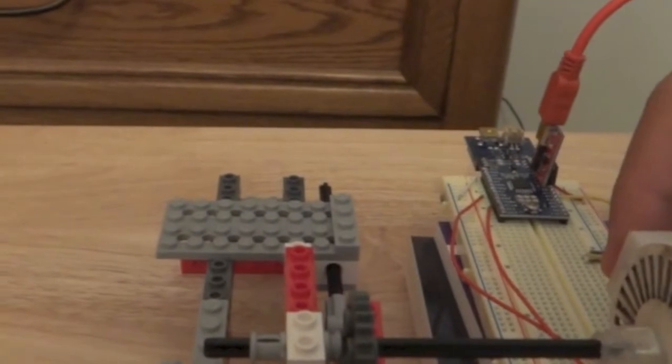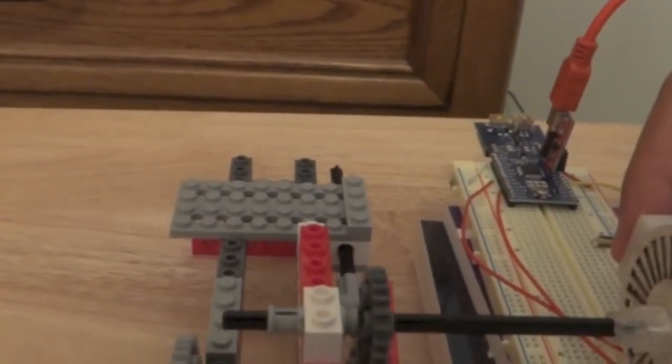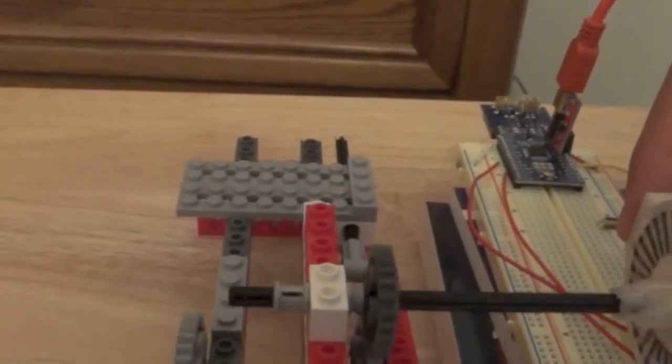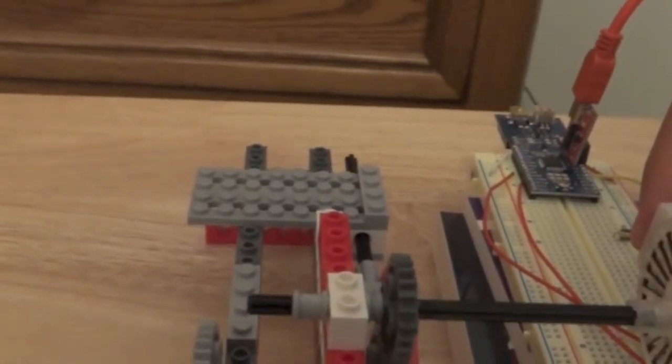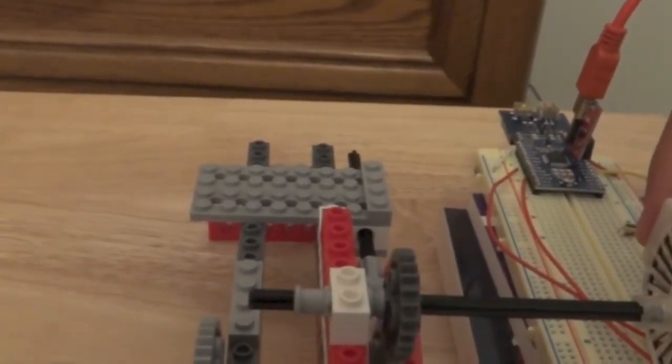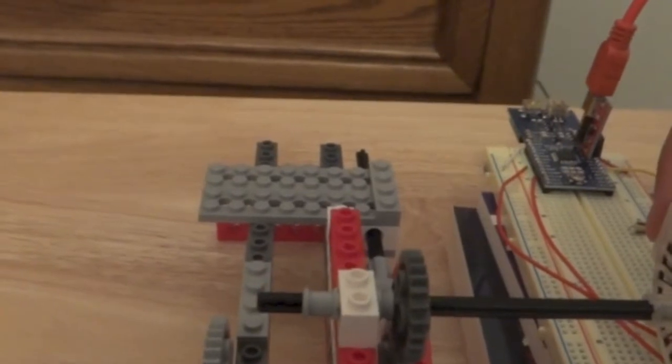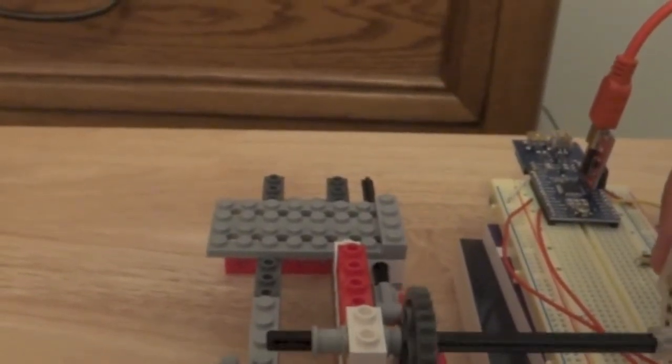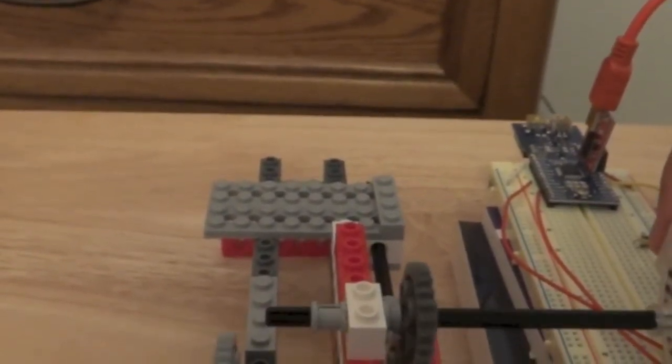So you can actually see that it starts and stops using an infrared LED and its corresponding receiver. And on the left hand side by the Lego you can see the piston moving in and out.